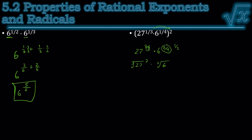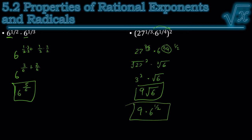The cube root of 27 is 3. If it's a square root, we usually don't write the index. 3 squared is 9, so it's 9 times the square root of 6. Or, since the problem initially had exponents, we'd write it as 9 times 6 to the 1 half to match the way the problem was originally written.